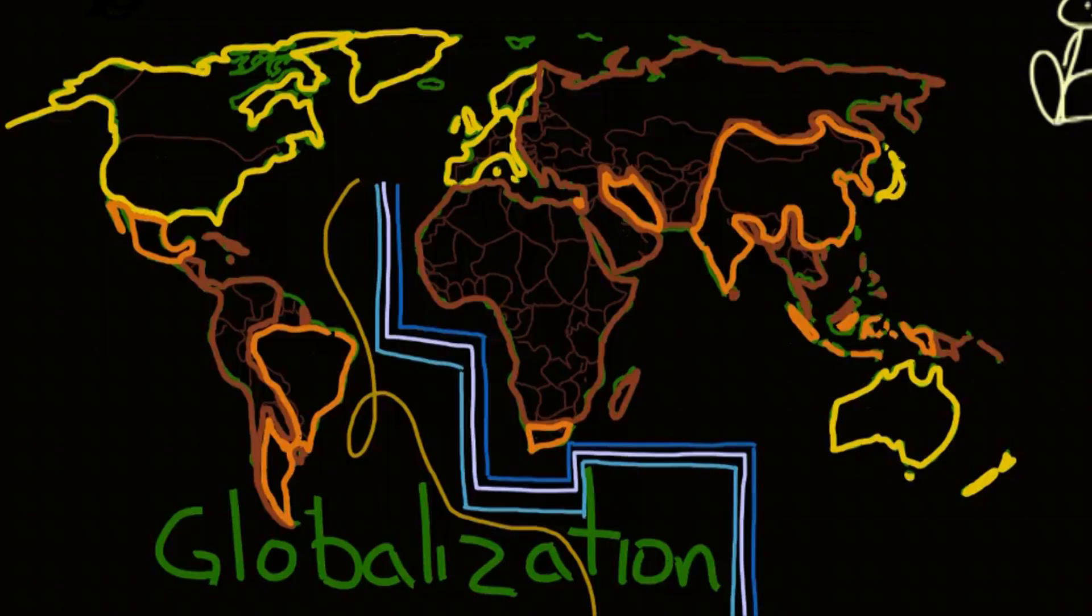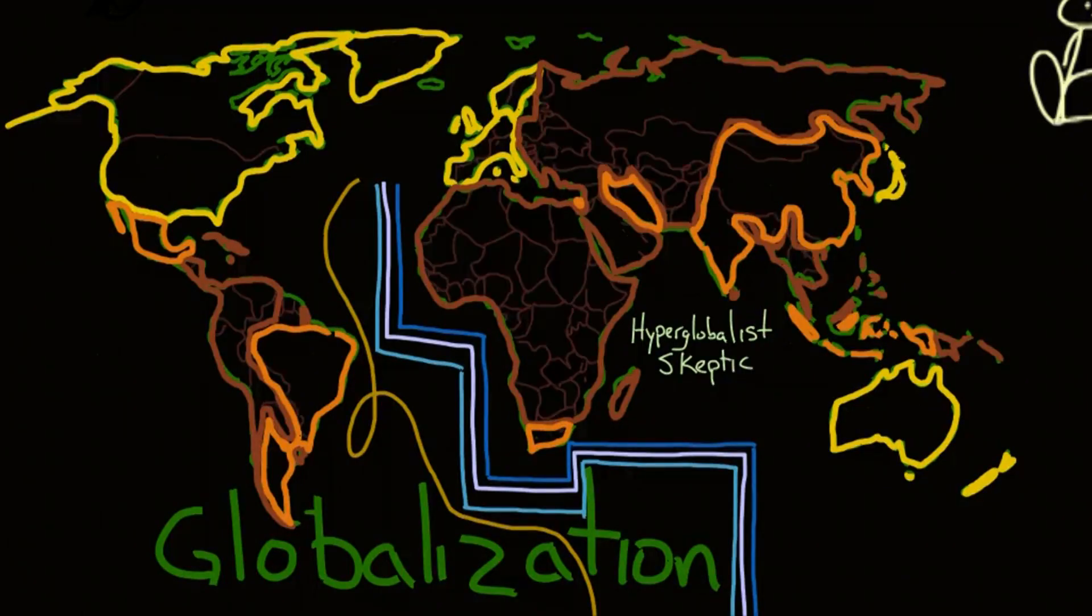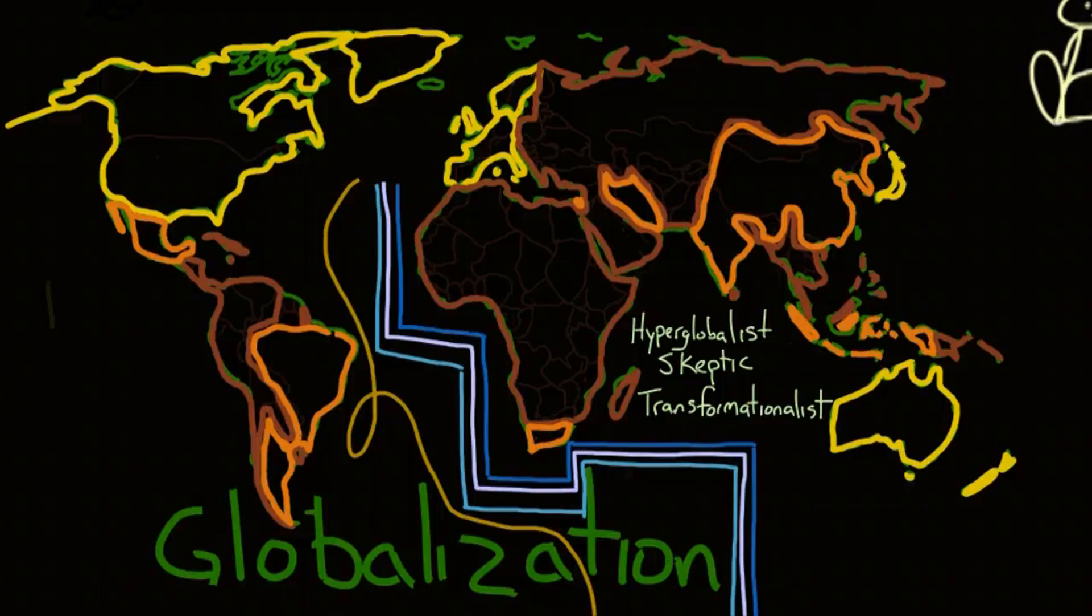There are different perspectives of globalization as well. Hyperglobalists believe that individual countries will become less important as countries become interdependent and the global society takes precedence. Skeptics believe that countries are still very important and rather than becoming globalized, the world is becoming regionalized, which you can see exemplified by transnational corporations. Despite their role in the global economy, they are still tied to their home country. And finally, transformationalists take a middle ground and simply state that the importance of national governments is changing, as is the design of the world order, though they are unspecific as to what it all is changing into.